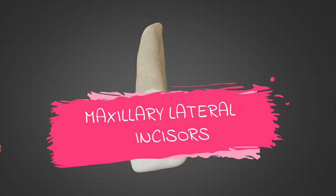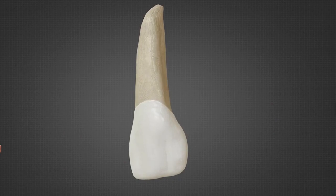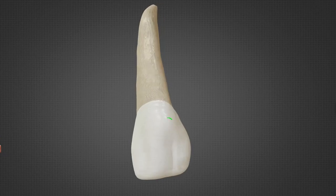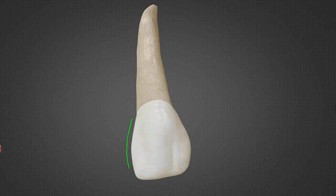Next are the maxillary lateral incisors, which are very similar to the central incisors, so let's just focus on the differences. The laterals are smaller in all dimensions. The labial surface is more convex, and the contact areas are more cervically placed — the mesial contact area is at the junction of the incisal and middle third, and the distal contact area is at the middle of the middle third of the crown. The incisal edge is rounded or curved with rounded angles.